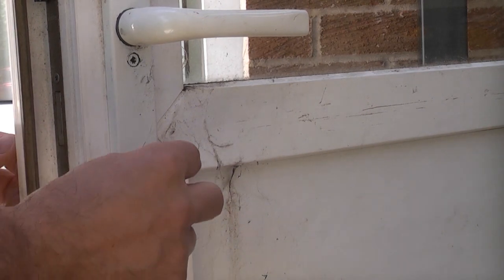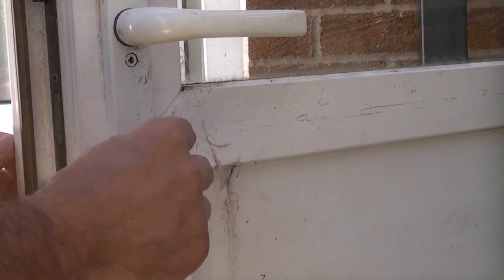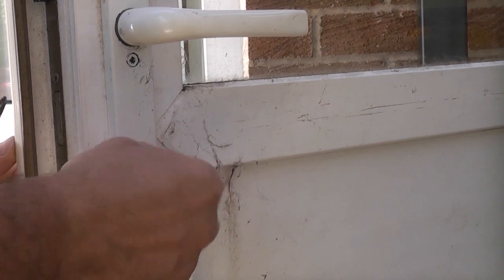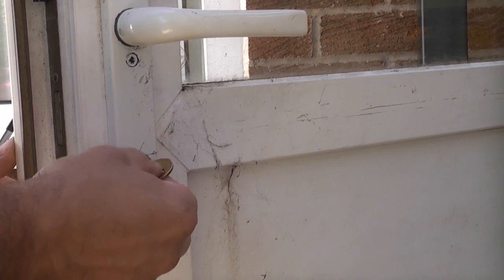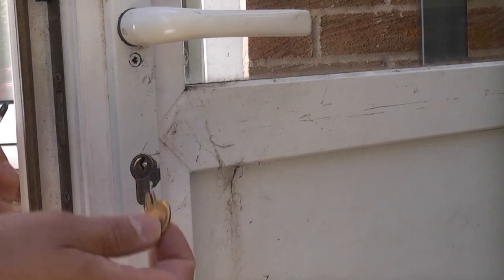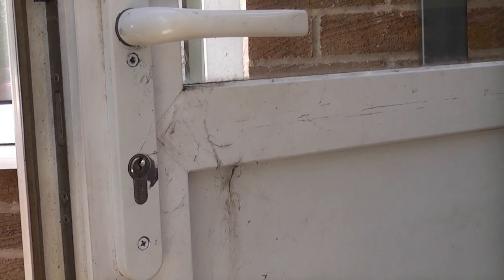The first step is to ensure that you can actually turn the door to lock and unlock it. If that is the case it is very easy. You can simply remove the Euro cylinder and then go and get the replacement cylinder.